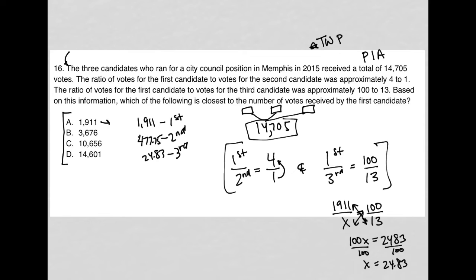Now, just looking at this, when I add all these together, it's not going to equal 14,705. That number, this 1911 number is way too small to get that. So A is gone for that reason.